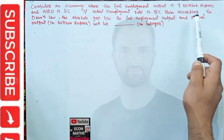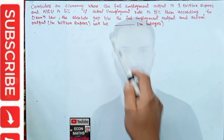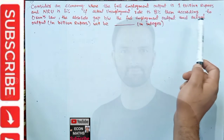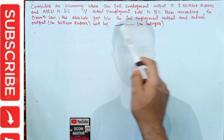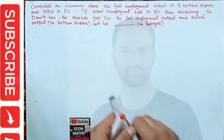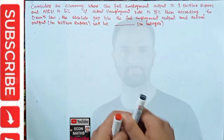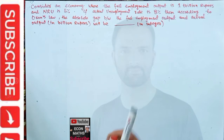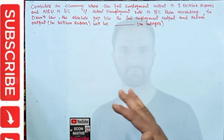If the actual unemployment rate is 8%, then according to Okun's Law, the absolute gap between the full employment output and actual output in billion dollars — we have to find that number. What will be the absolute gap between the full employment output and actual output? The answer should be an integer.